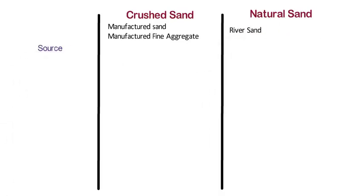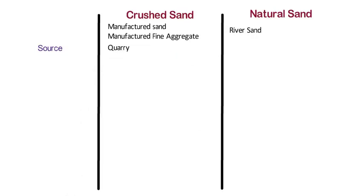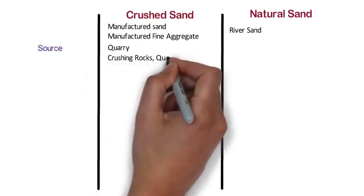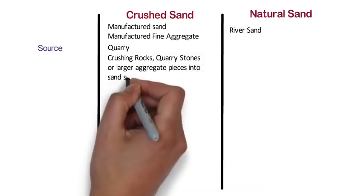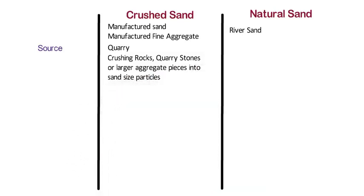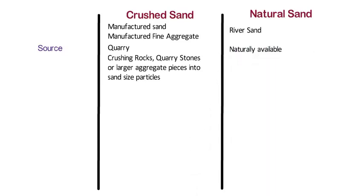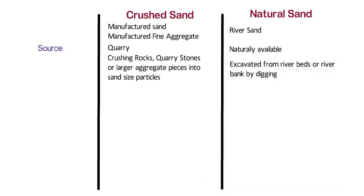Source: The source of crushed sand is a quarry. It is manufactured by crushing rocks, quarry stones, or larger aggregate pieces into sand-sized particles in a factory or quarry. Whereas river sand is naturally available and is usually excavated from river beds or river banks by digging.